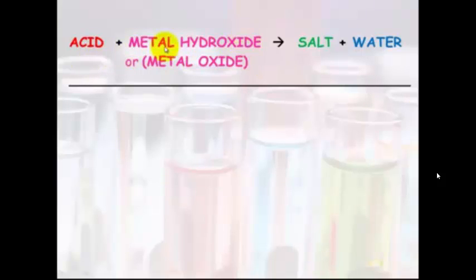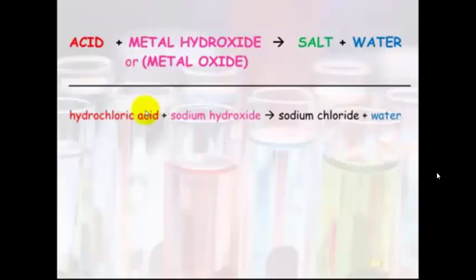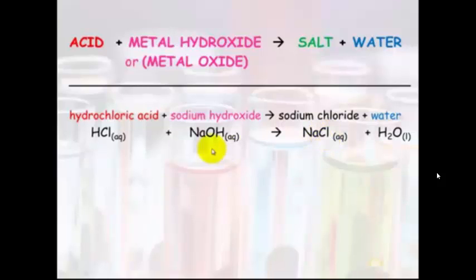An acid plus a metal hydroxide or a metal oxide will make salt and water. So, an example: hydrochloric acid plus sodium hydroxide makes sodium chloride plus water. HCl plus NaOH makes sodium chloride, which is the salt. The sodium there has hooked up with chloride, and what's left is H₂O. That makes H₂O. Remember, water is always liquid. Don't forget your states.